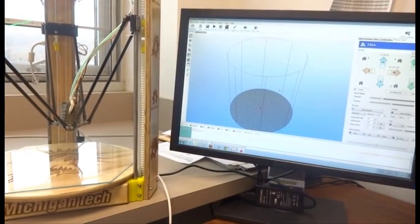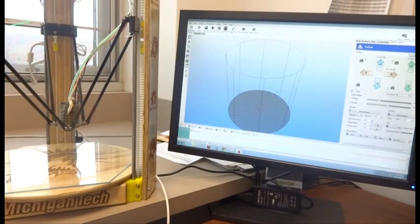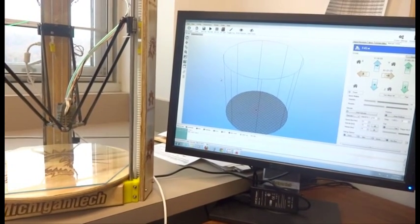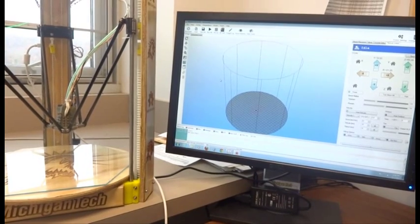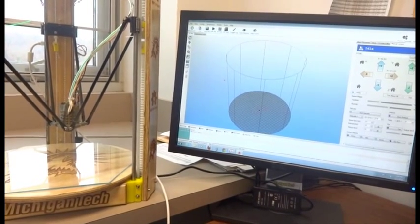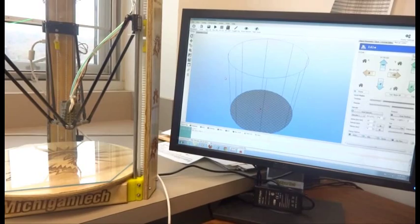After you've decided upon the type of object that you'd like to print, and either downloaded it off the internet from one of the free repositories or designed it yourself in CAD, take it into a slicing program where you take the exterior of the object, denoted by an STL type file, into G-code. G-code is simply the instructions that tell the printer how the head is supposed to move.